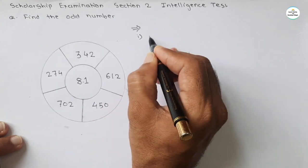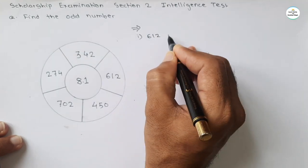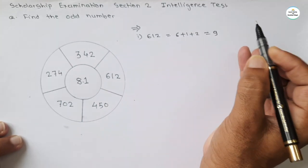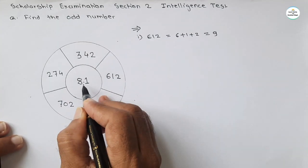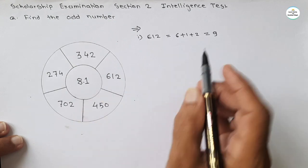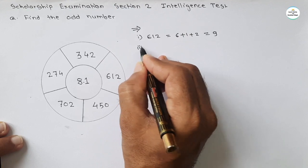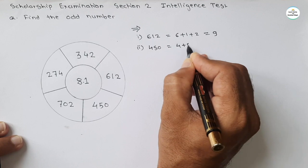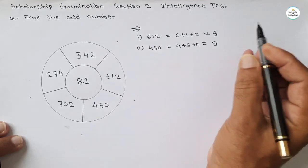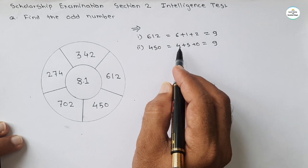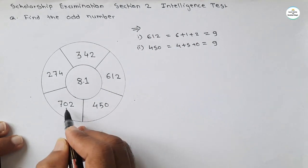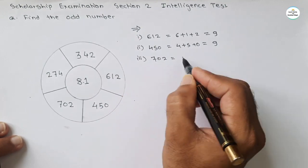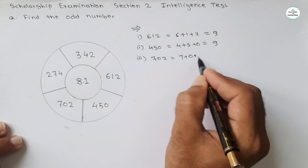We will take the sum of digits of these numbers and find whether it is applicable. Starting with 612: sum of digits is 6 plus 1 plus 2, that is 9. The relation of 9 with 81 is that 81 is the square of 9. Now the second number, 450: 4 plus 5 plus 0 is 9 again. So this sum-of-digits pattern applies to these two numbers.